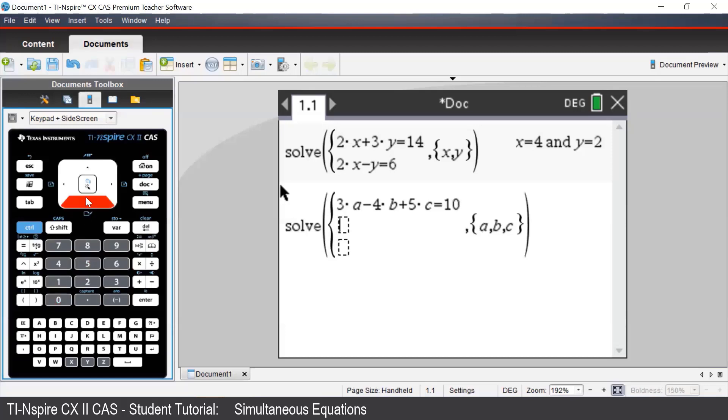Again, we press the down arrow on our handheld to go to the next line, and enter in our second equation. 2a plus b minus 3c equal to negative 7.